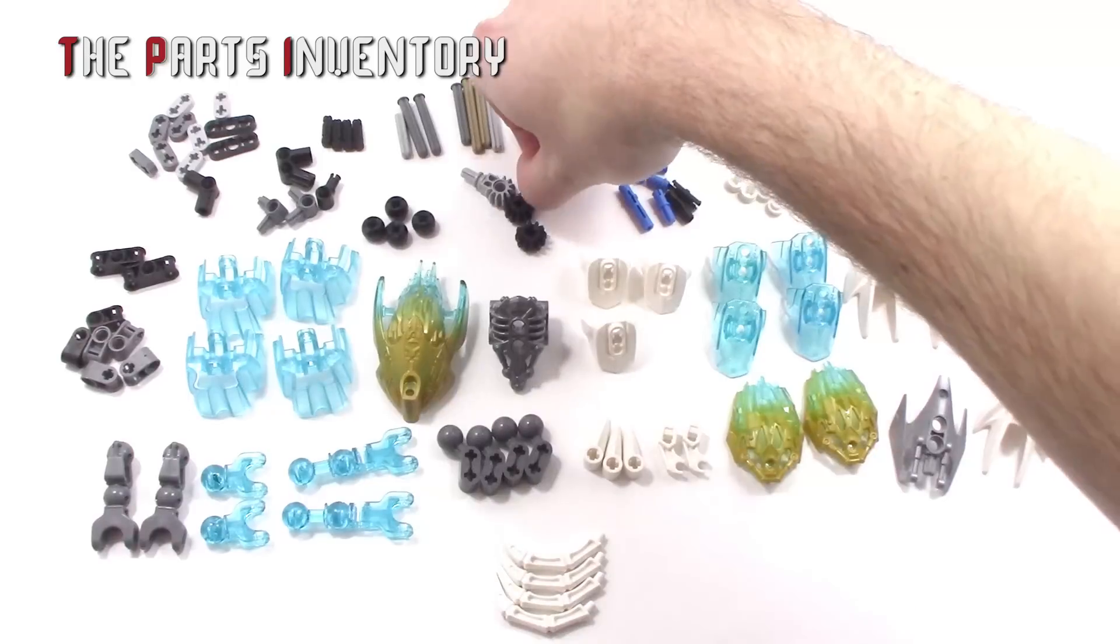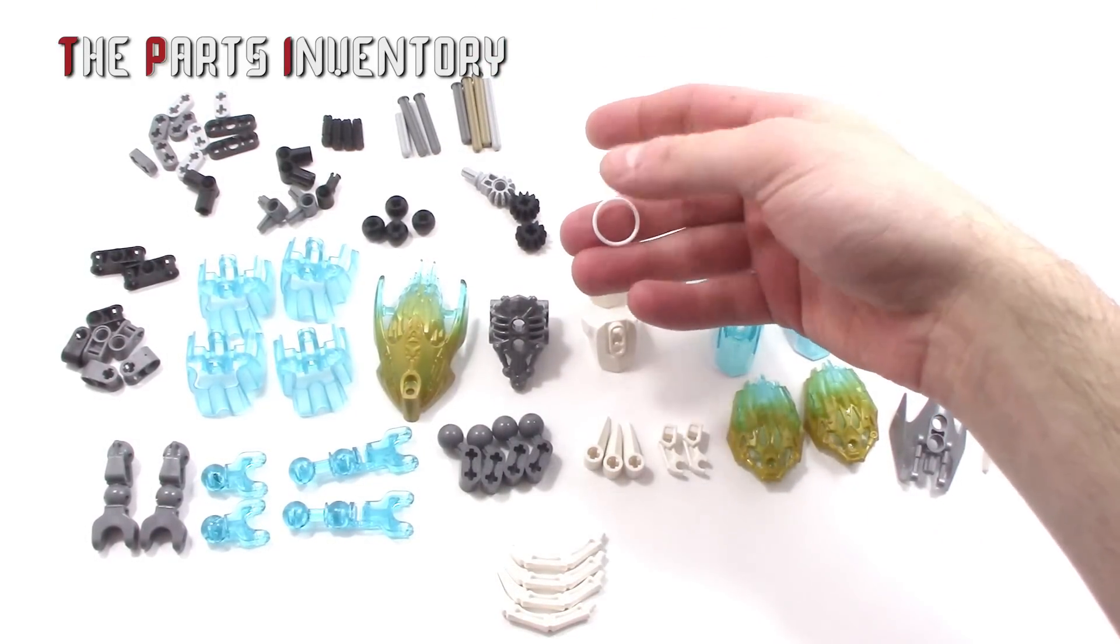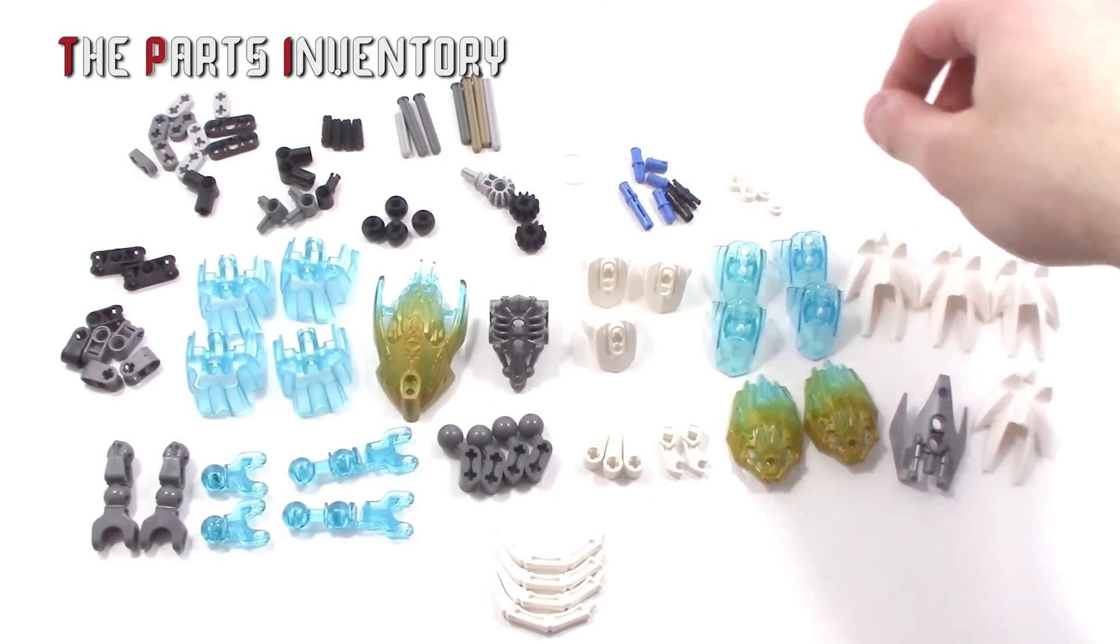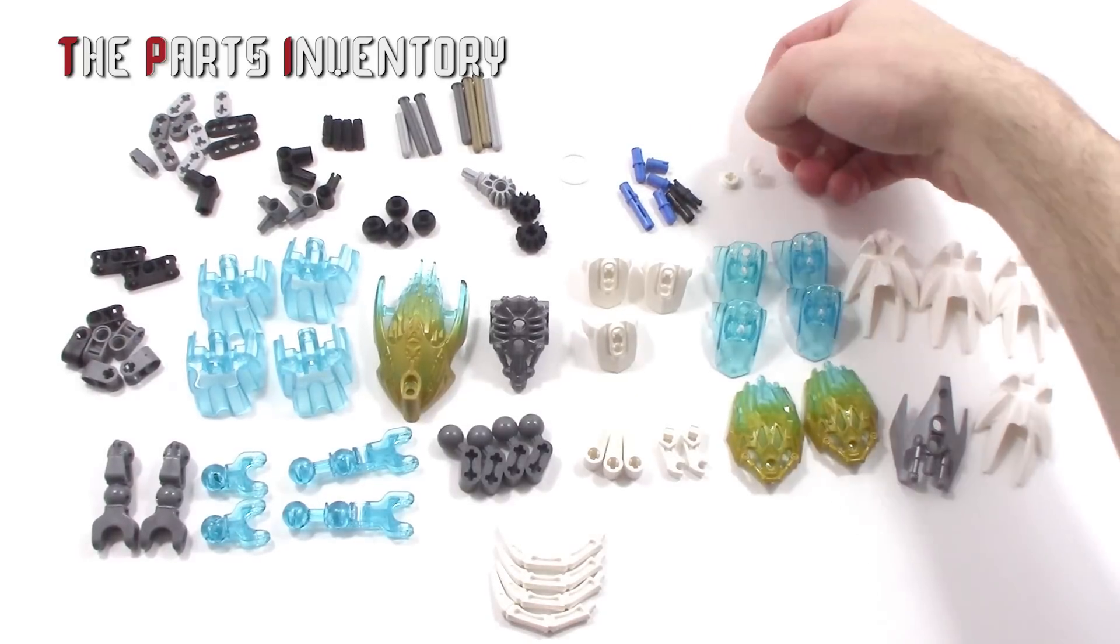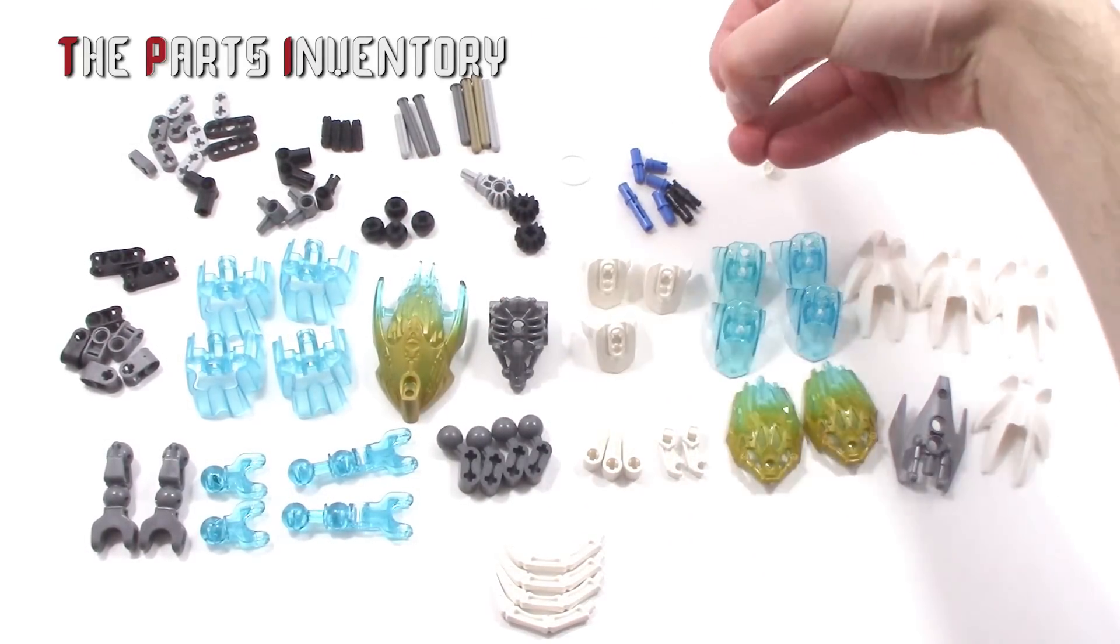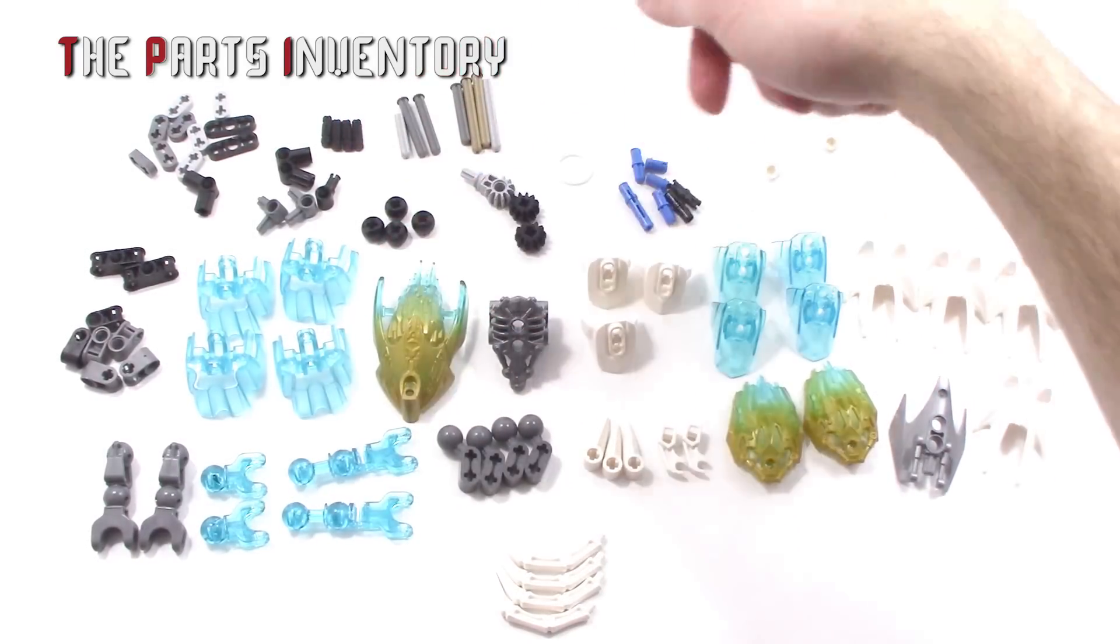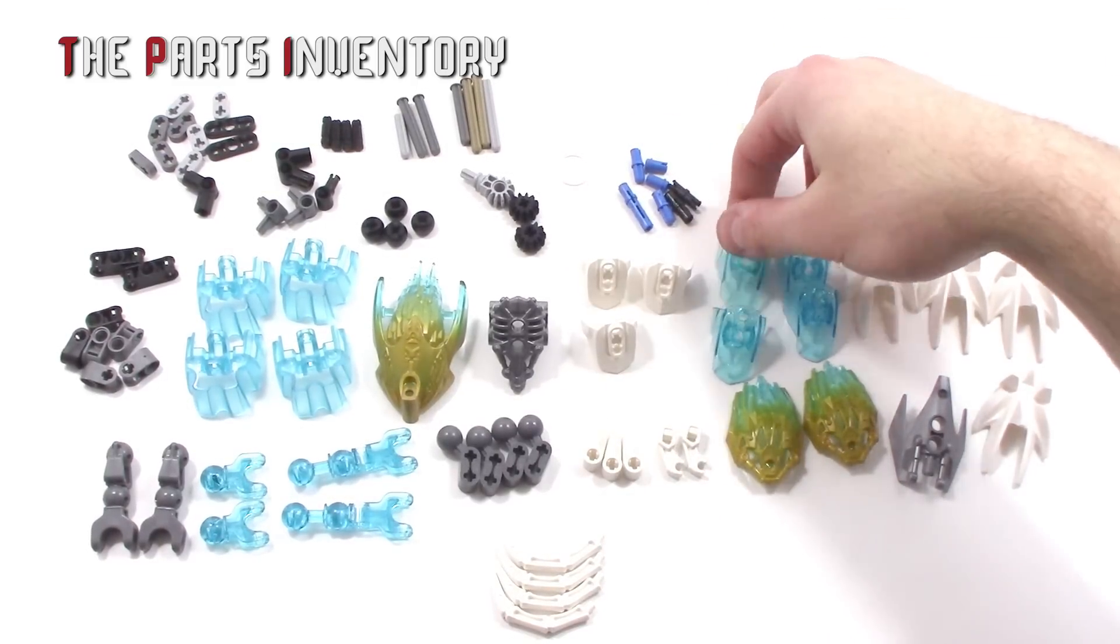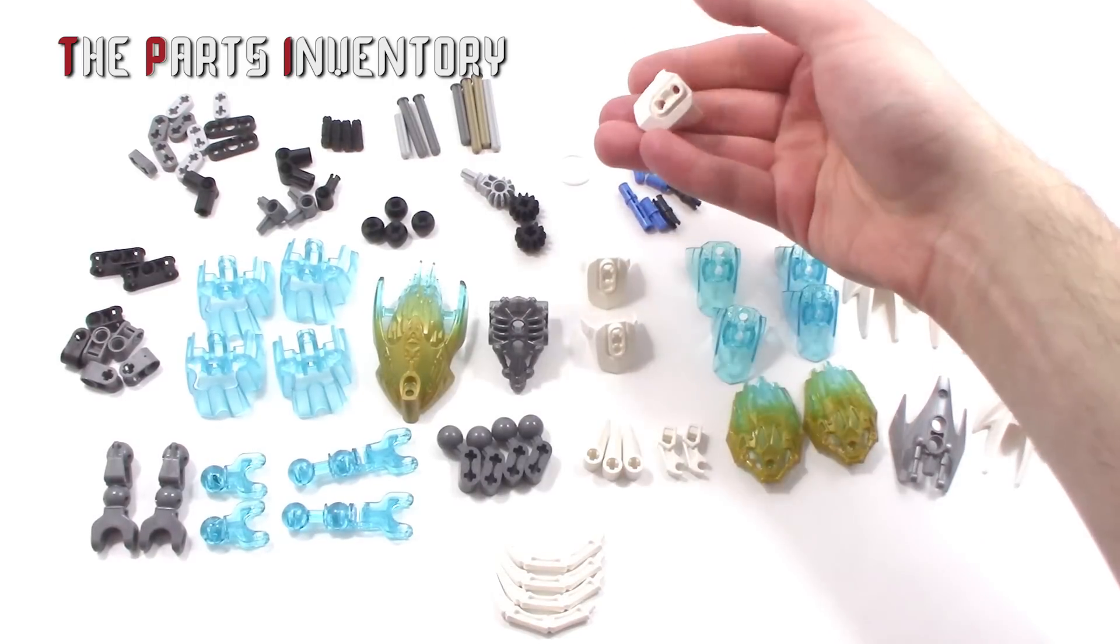Regular size rubber band. I got this one from a Skull Scorpio. You can get them from lots of places. These - two of these are studs, as you can see, and two of these are blanking on the name. Four length trans blue, three length white.